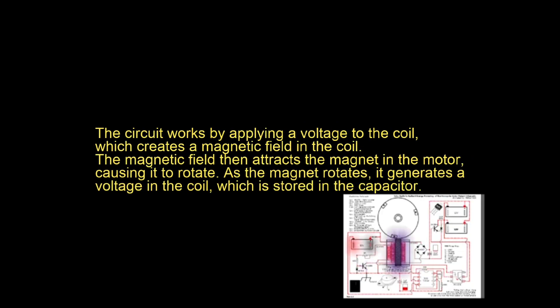The circuit works by applying a voltage to the coil, which creates a magnetic field in the coil. The magnetic field then attracts the magnet in the motor, causing it to rotate.